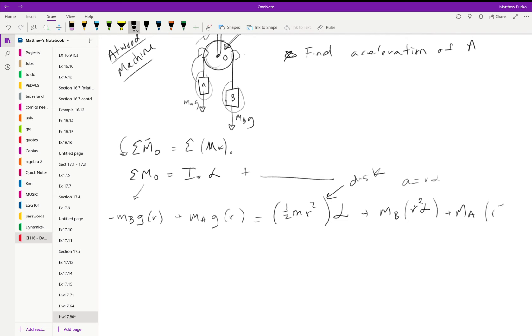Now this is because acceleration is equal to alpha r. Acceleration of B, since this chord is inextensible, is equal to acceleration of A. So let's just call that the acceleration.